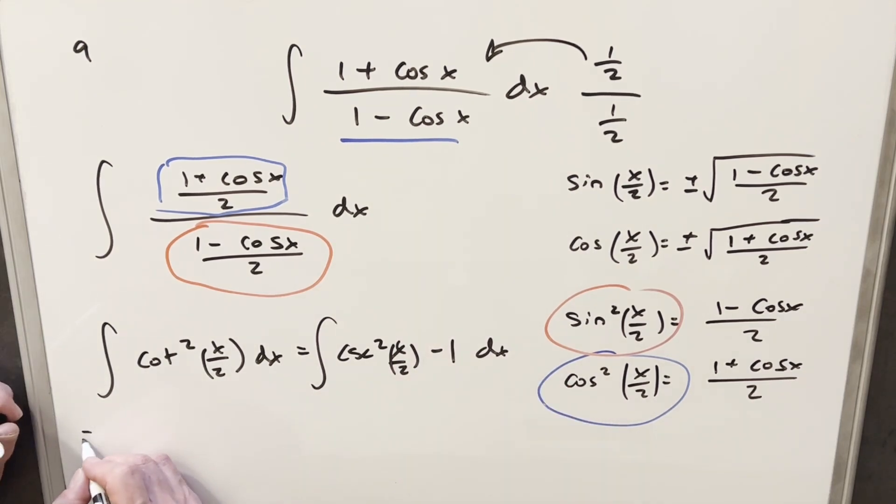But now I can just go ahead and integrate this because the integral of cosecant squared is going to be minus cotangent of x over 2. And we're just going to need the chain rule with this 2 in the denominator. We can bring this up front as a 2. And then just integrating 1, I'm going to have minus x plus c.